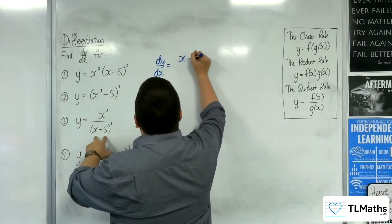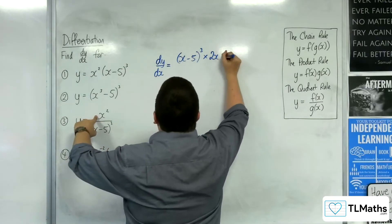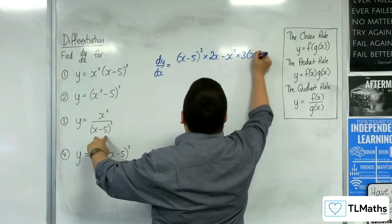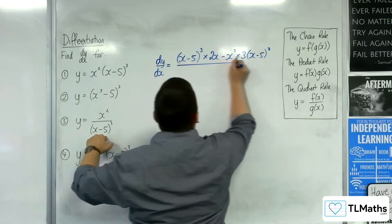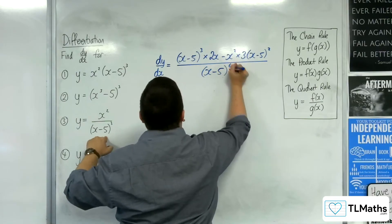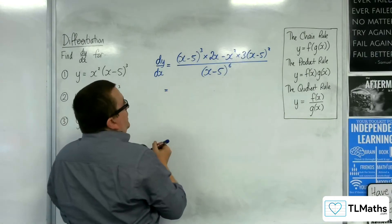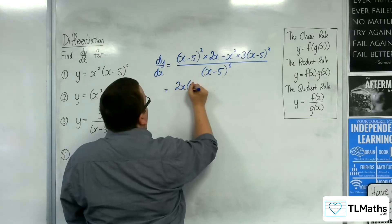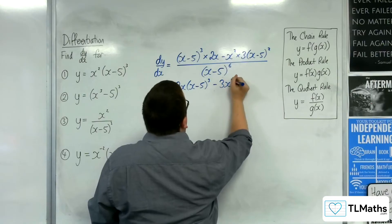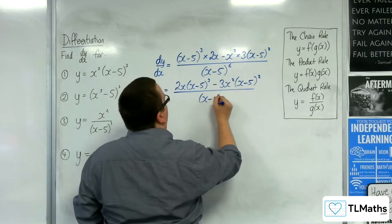I would go straight in with the quotient rule here. You've got the bottom times the derivative of the top, which is 2x, take away the top times the derivative of the bottom — which is 3(x minus 5) squared using the chain rule — all over the bottom squared.